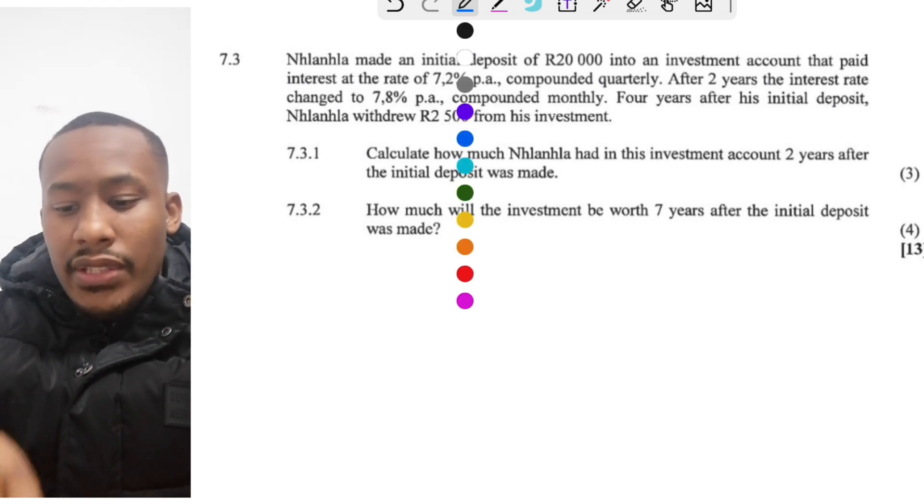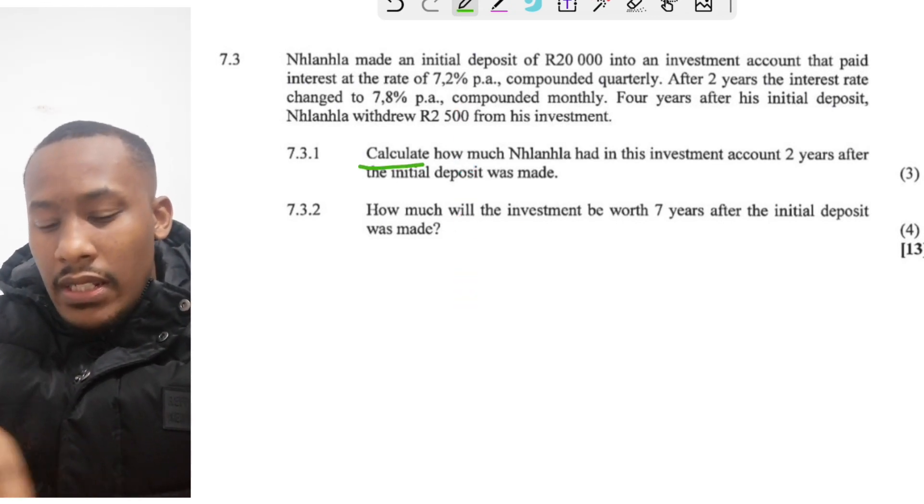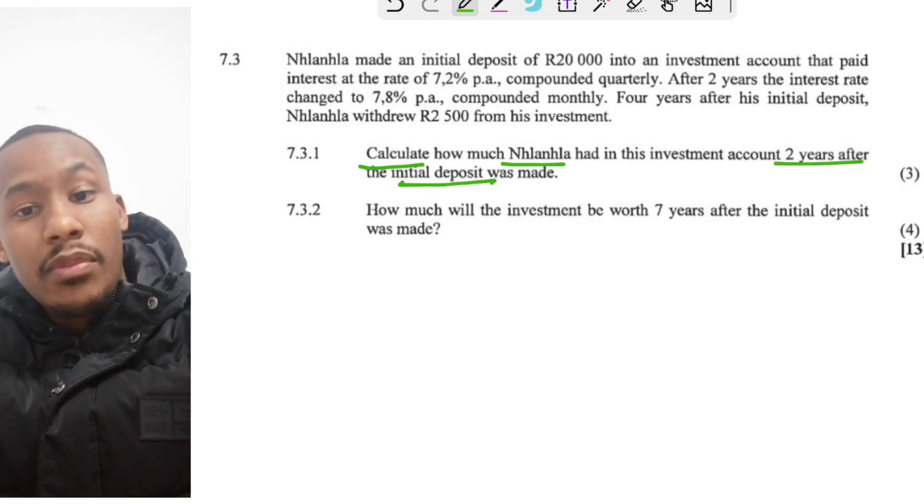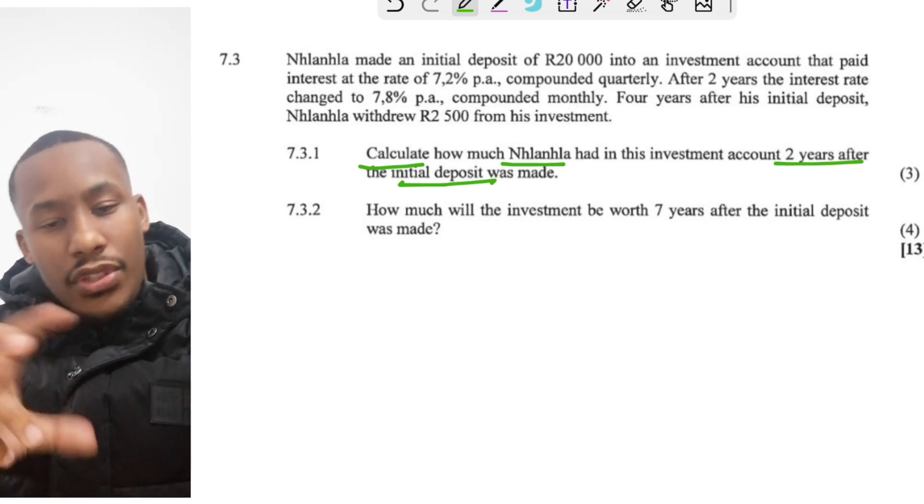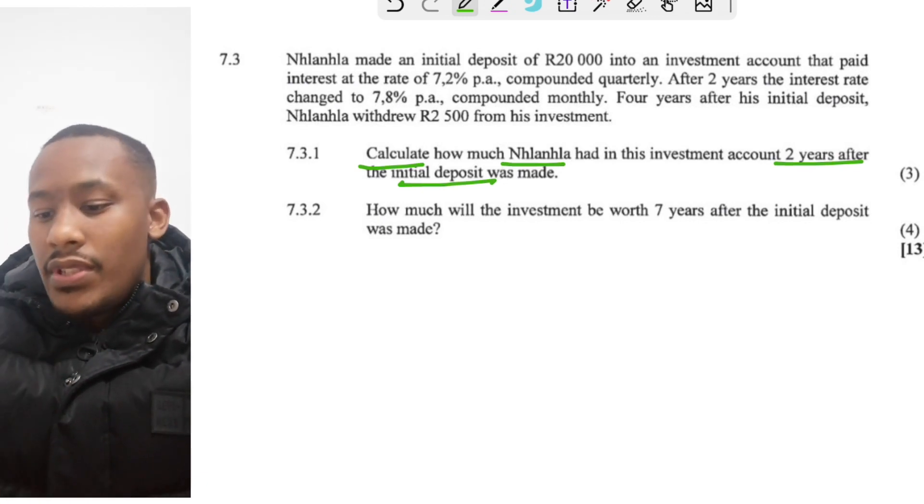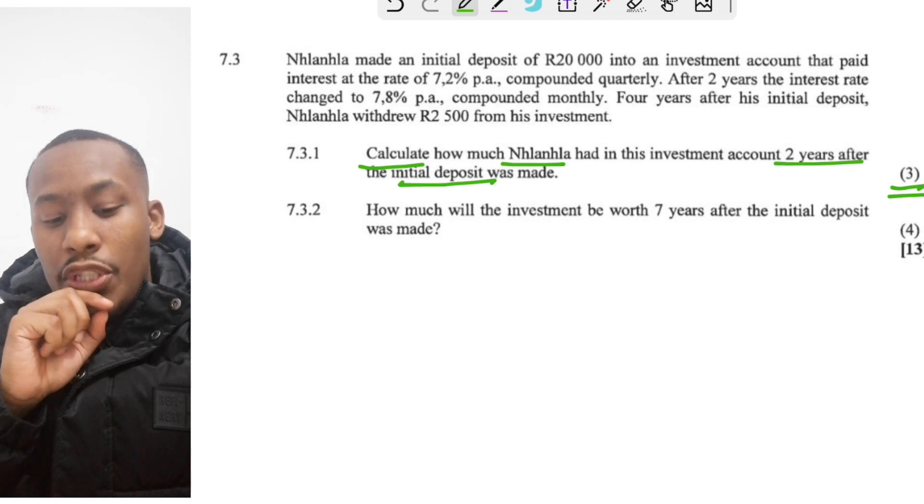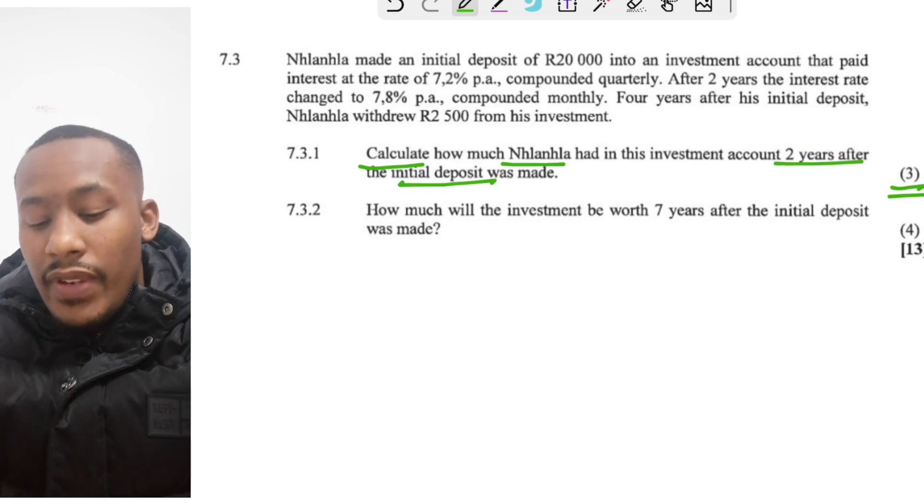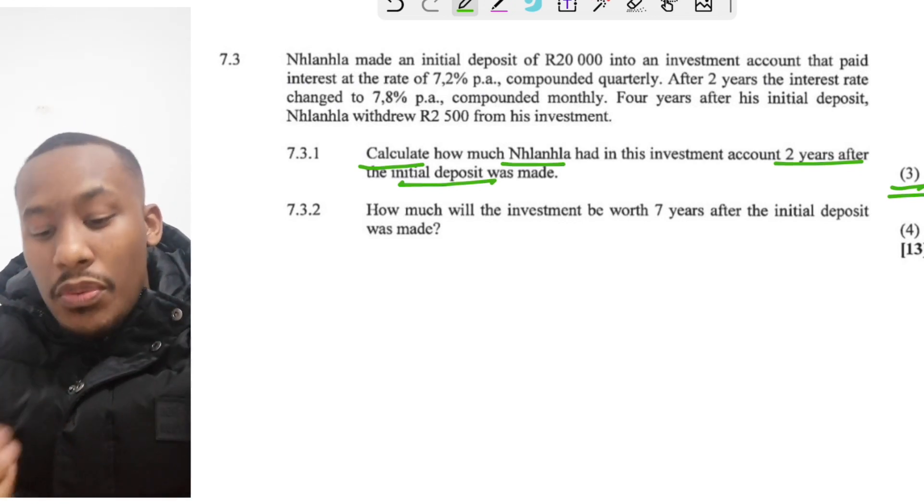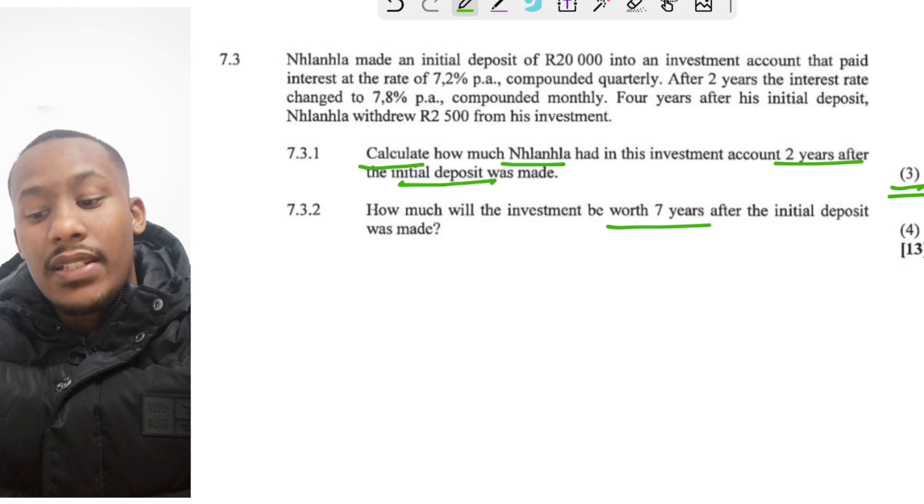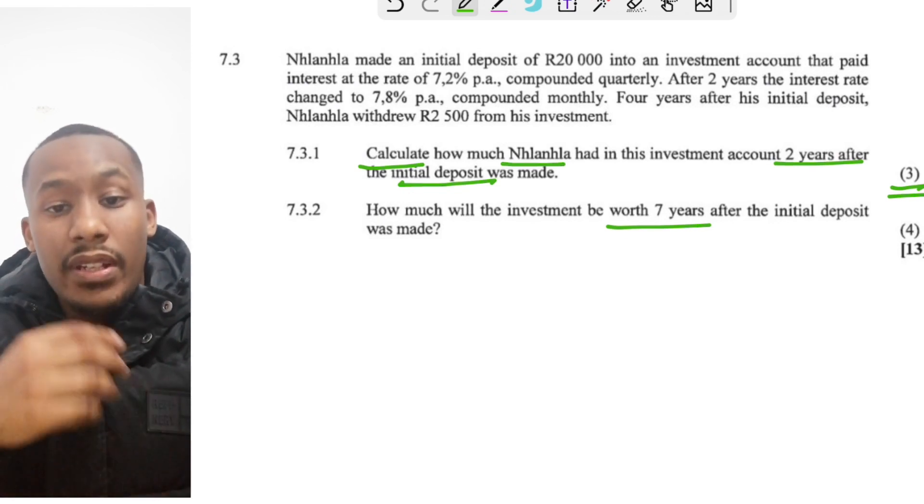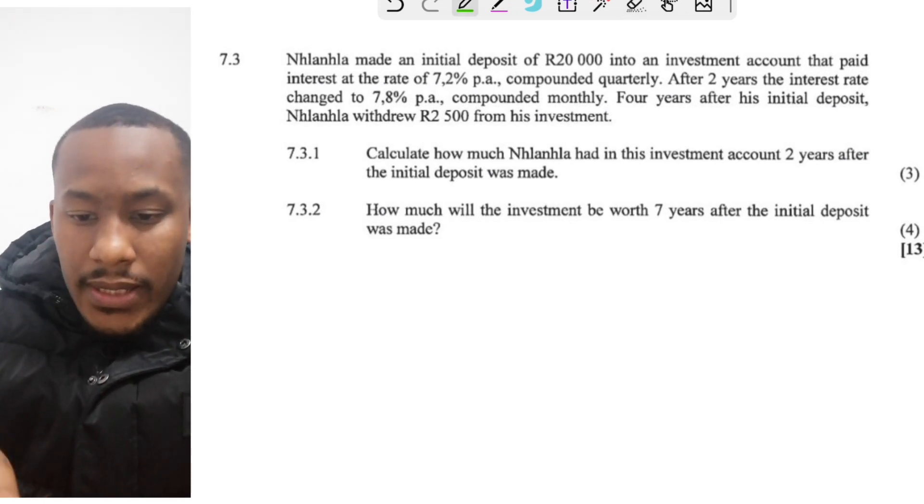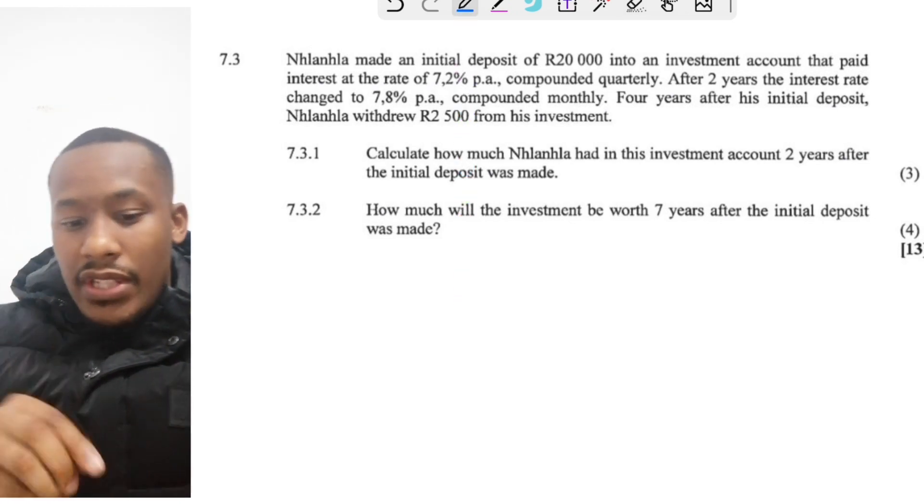There are two questions here. The first question is to say calculate how much Mr. N had two years after his initial deposit was made, just two years after the initial deposit. That's for three marks. And then question 7.3.2 is, how much will this investment be worth after seven years from the initial deposit? So not too hectic. Let's draw a timeline first so you can understand what's going on.